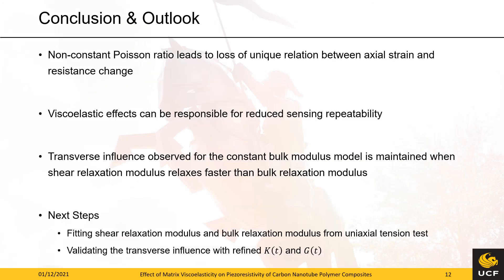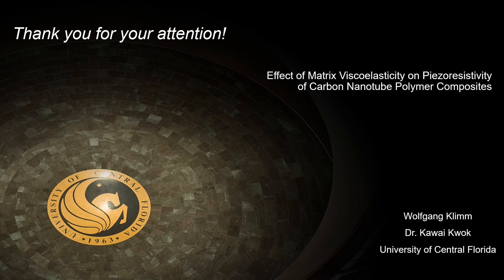This brings me to our conclusion. First, a non-constant Poisson's ratio over time leads to the loss of the unique relationship between axial strain and resistance change according to the preliminary investigations. Consequently, the answer to whether viscoelasticity can be responsible for reduced sensing capability has to be answered with yes. In addition, the influence of the transverse compaction persists when the bulk relaxation modulus relaxes slower than the shear relaxation modulus, getting rid of the assumption of a constant bulk modulus. The next steps include the fitting of the shear and bulk relaxation modulus from uniaxial tension tests and the implementation of the refined material model into finite element simulations. Thank you for your attention, and I look forward to your questions during the designated Q&A session on January 12th.